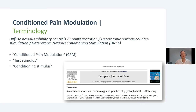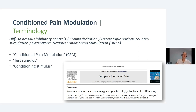Let's talk about terminology. Before the year 2010, many different terms were used. The 'diffuse noxious inhibitory controls' was the term used for this phenomenon in animal models, and when adopted to people, researchers talked about the 'diffuse noxious inhibitory controls-like reaction' — a mouthful. Therefore, several researchers, leading physicians, and pain specialists came together and said we need nomenclature that we can all agree upon and use so we can all talk about the same thing.